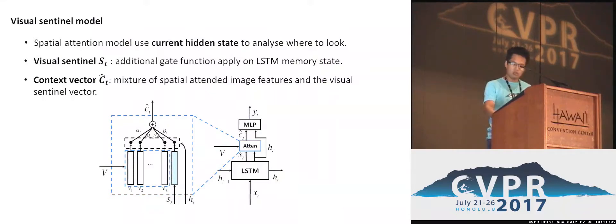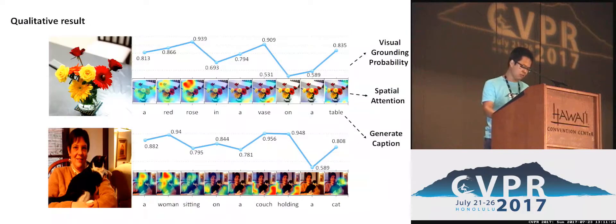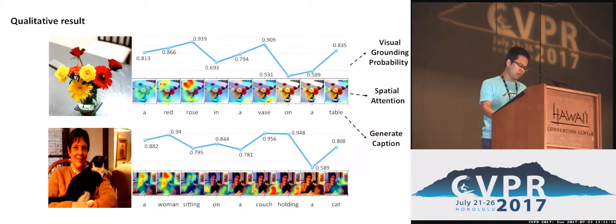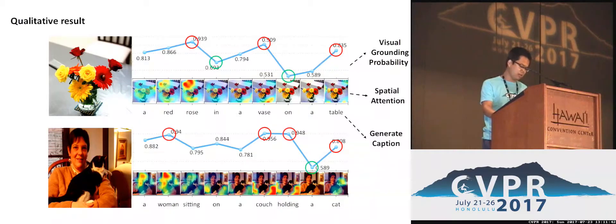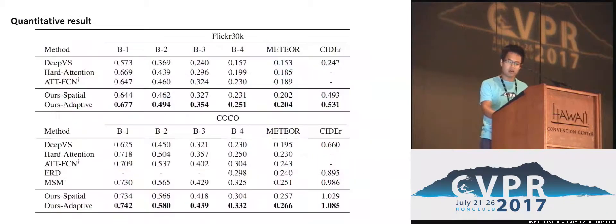Here are two qualitative results which show how adaptive attention works. We see that our model learns to attend to the image more when generating words like 'rows,' 'ways,' and 'table.' Our attention attends to the image less when generating words like 'a,' 'in,' and so on.